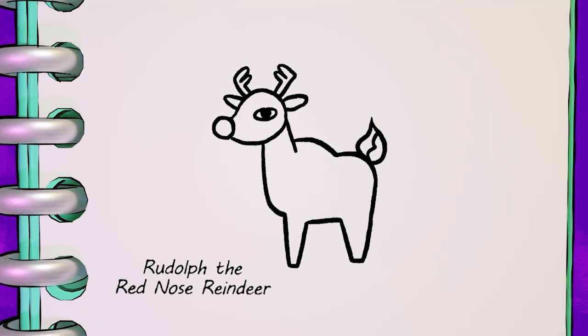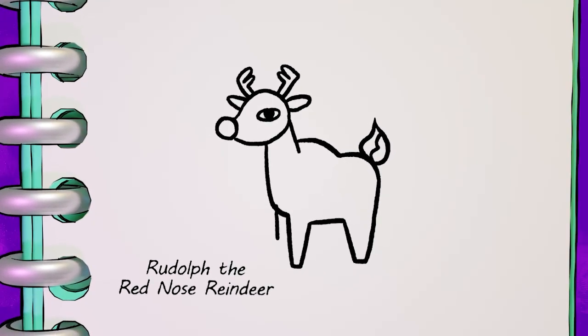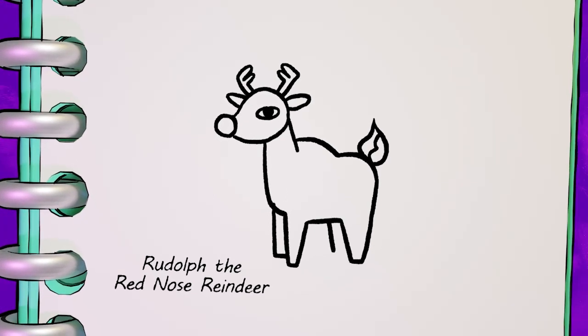Then we'll draw a nice fluffy tail. You can have a bit of fun with whatever tail shape you want here. Now we'll finish off the rest of his body by adding another front leg and another back leg.